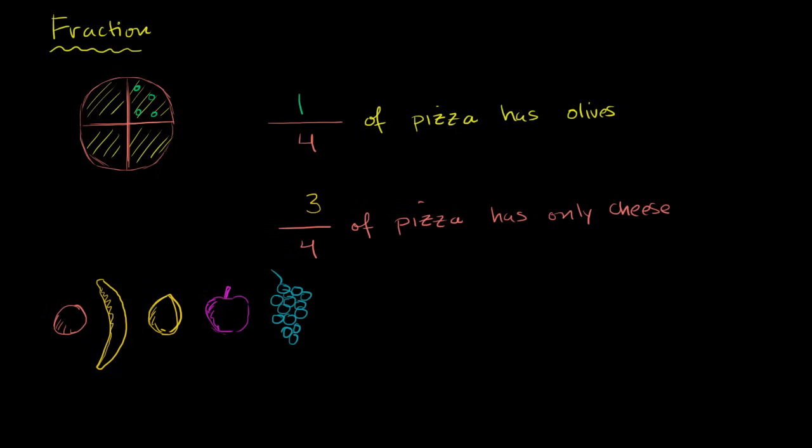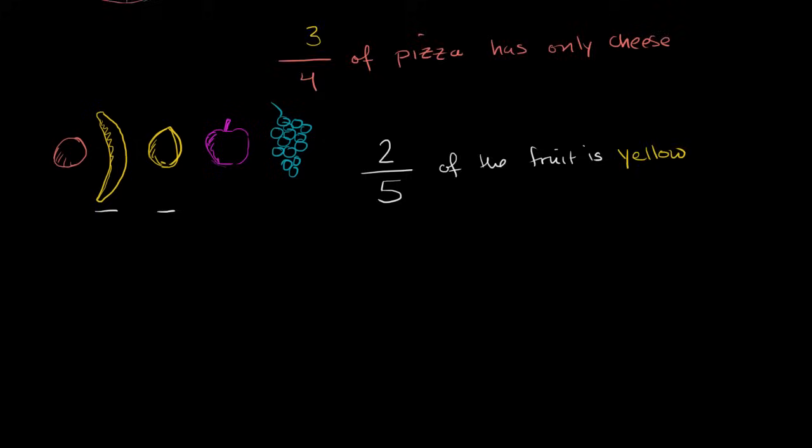Well, we could say we have a total of one, two, three, four, five pieces of fruit. So there's a total of five pieces of fruit. And then what fraction of those pieces of fruit are yellow? Well, the way I drew it, I have two yellow pieces right over here. So we'd say two-fifths of the fruit is yellow. Two-fifths is yellow.